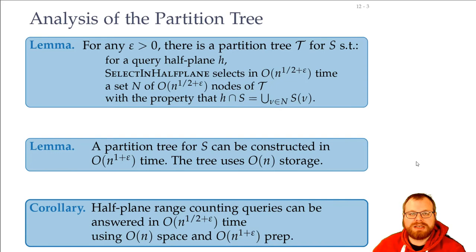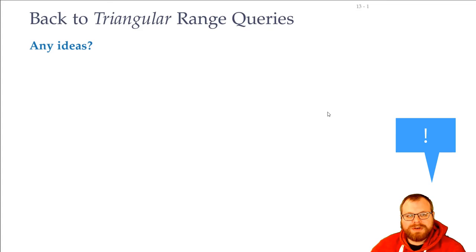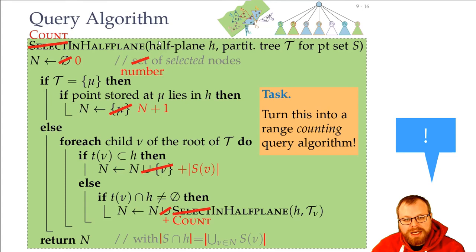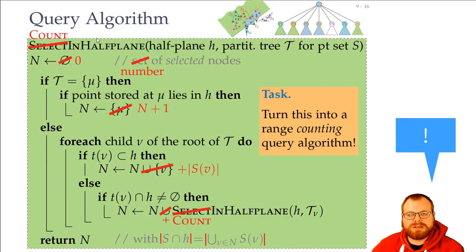How can we use this to solve our original problem — the triangular range queries? This is actually very easy. We don't have to do anything complicated — we can just use the exact same algorithm. Instead of using a half-plane, we use the triangle. We check whether a point lies in the triangle instead of in the half-plane, and we compute the intersection with the triangle instead of the half-plane. As long as we have a constant-size polygon, this algorithm is exactly the same.